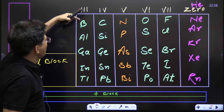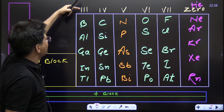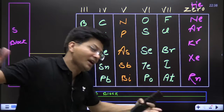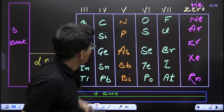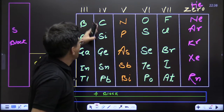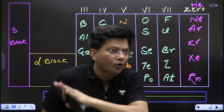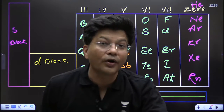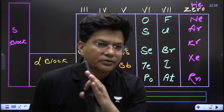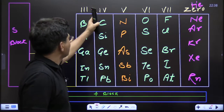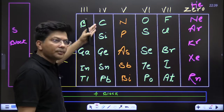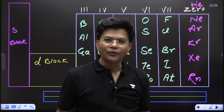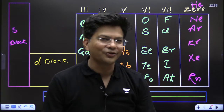Carbon, silicon, germanium, tin, lead — all of them have four electrons in the outermost orbit. No need of atomic number, no need to write down the electronic configuration. Just remember: group 14 elements — carbon, silicon, germanium, tin, lead — all have four electrons in the outermost orbit.